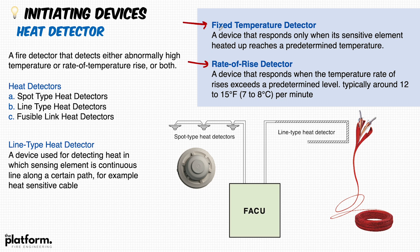The first is the fixed temperature detector, which responds only when its sensitive element reaches a predetermined temperature — for example 58 degrees or whatever other set value. The second type is the rate of rise detector, which responds when the temperature rate of rise exceeds a predetermined level, typically around 12 to 15 Fahrenheit degrees or 7 to 8 Celsius degrees per minute.